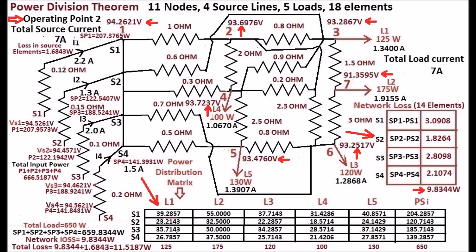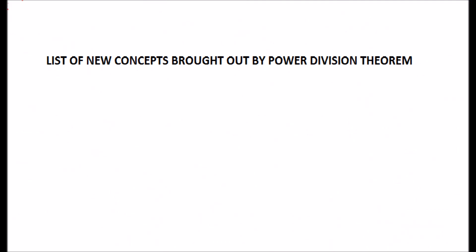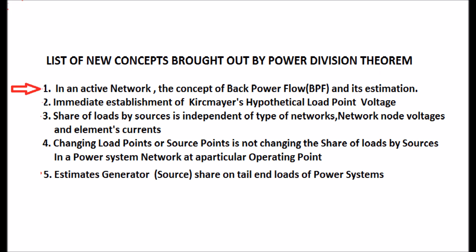We now see the list of new concepts brought out by the Power Division Theorem. Number one: in an active network, the concept of back power flow and its estimation. Number two: immediate establishment of Kirchmayer's hypothetical load point voltage. Number three: share of loads by sources is independent of type of network, network node voltages, and element currents. Number four: changing load points or source points does not change the share of loads by sources at a particular operating point. Number five: estimates the generators' share on tail-end loads of power systems.